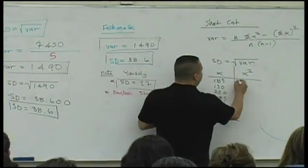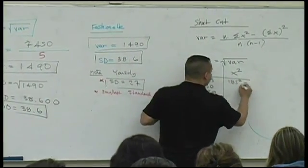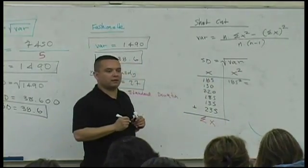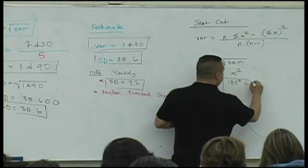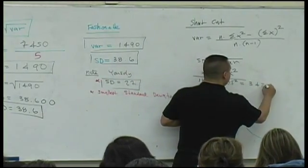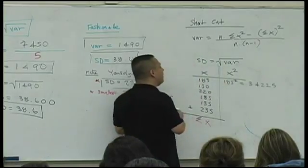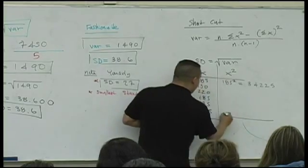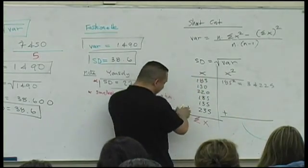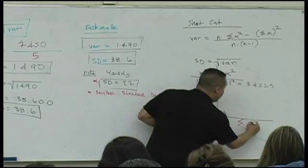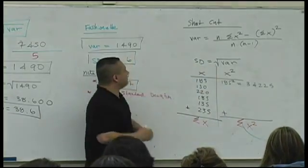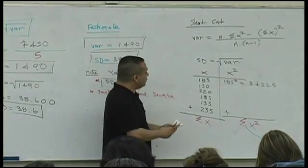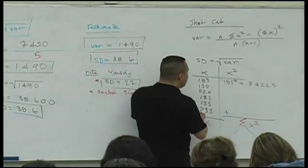So what is 185 squared? 34,225. Why am I squaring all those values? Because eventually, I'm going to add them, and I'm going to get the sum of the x squared values. That's going to go here.